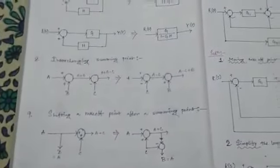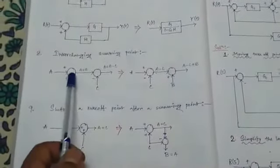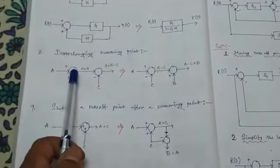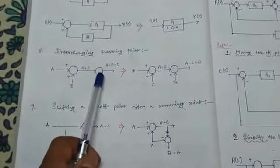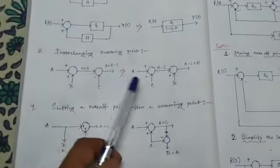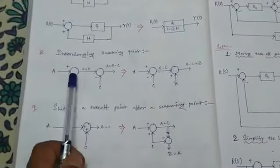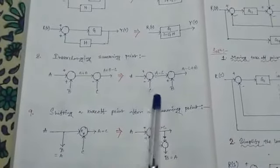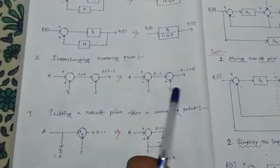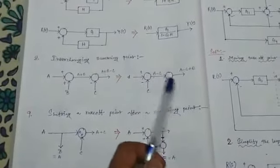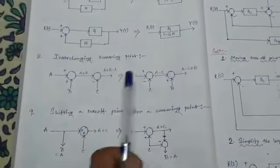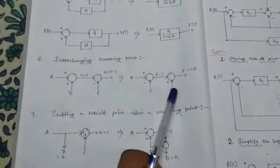Rule number eight: interchanging summing points. If we want to interchange two summing points — say summing point 1 and summing point 2 — we can simply do so directly, placing summing point 1 before summing point 2.